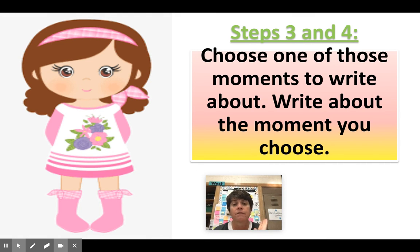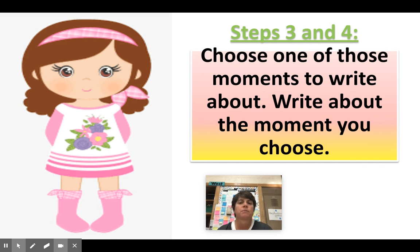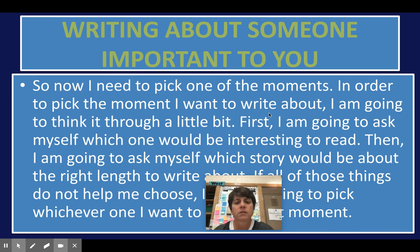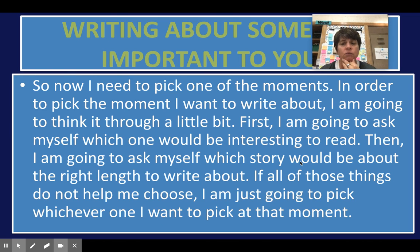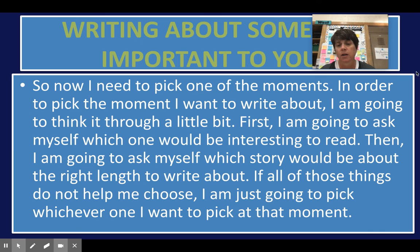After I've chosen Amelia and brainstormed three small moments, I'm going to choose one of those moments to write about. To pick the moment I want to write about, I'm going to think it through a little bit. First, I'll ask myself which one would be interesting to read about. Then I'll ask myself which story would be about the right length — because if I can only fill a couple of lines, that's probably not the story to pick. If none of those things help me choose, I'll just pick whichever one I want at that moment.